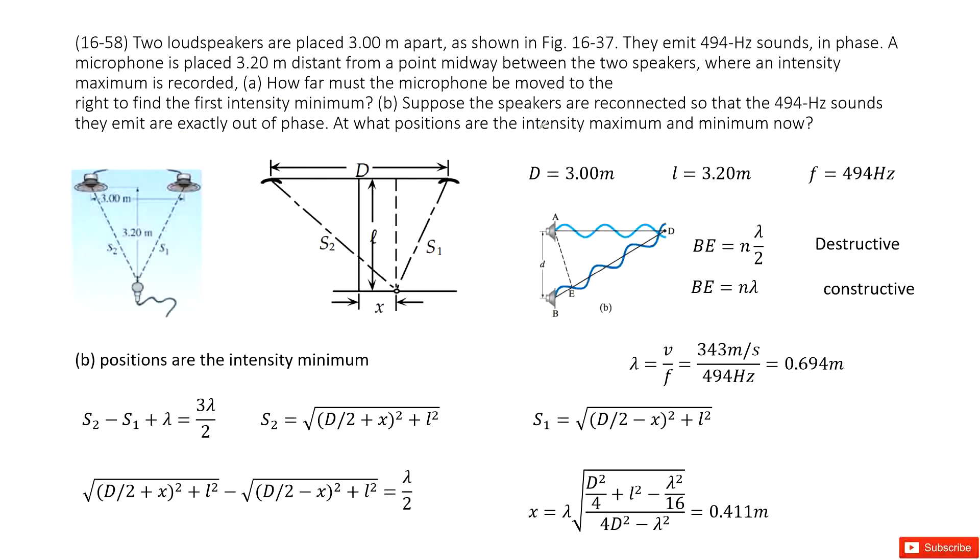The next part, what if the intensity is minimum? If it is minimum, it is called destructive. So we input N times lambda over 2 inside there. And also these two exactly out of phase. Out of phase brings the wavelength lambda. And the most close one is 3 lambda over 2. And then we input S2, S1 inside. We get the same answer as part A. Thank you.